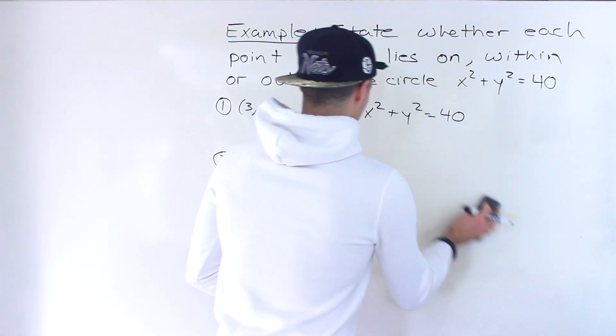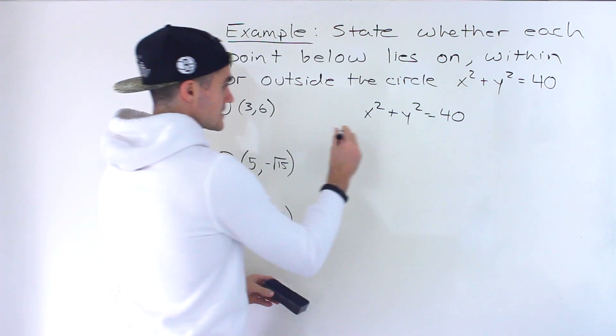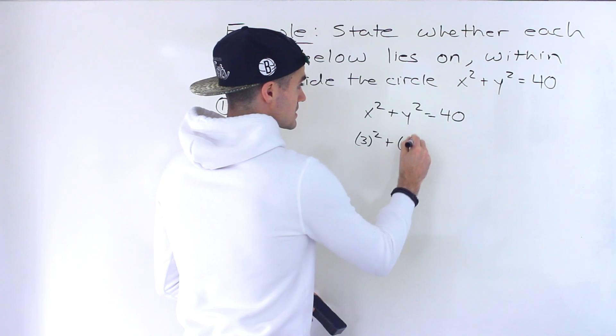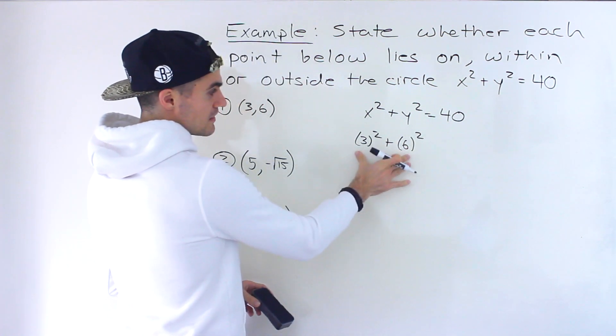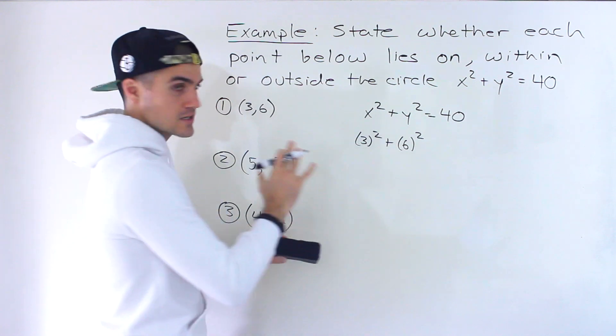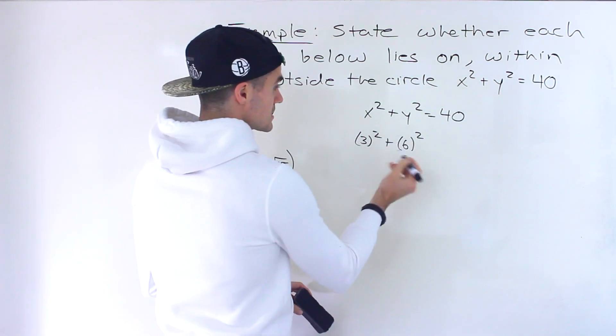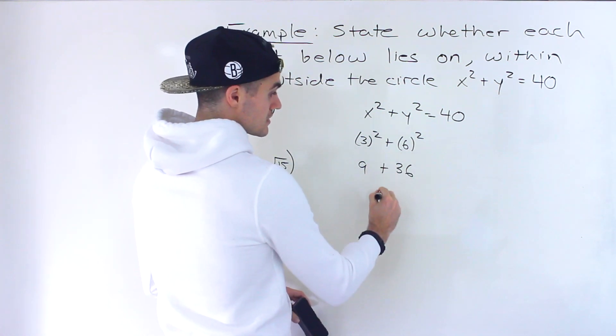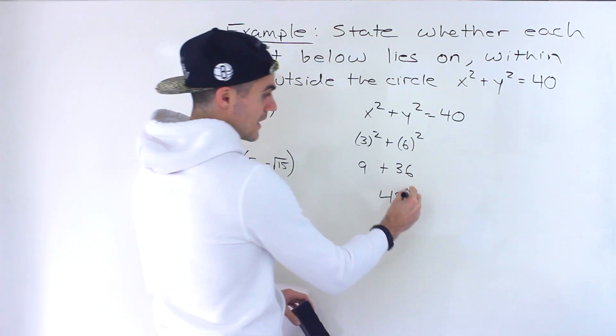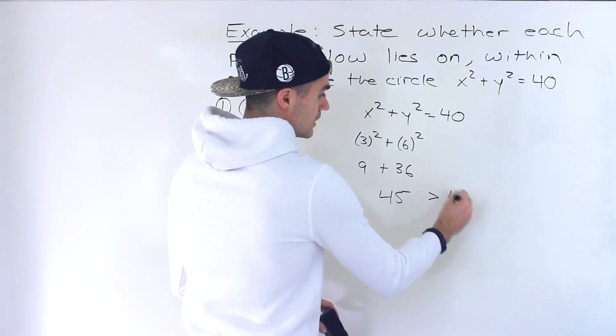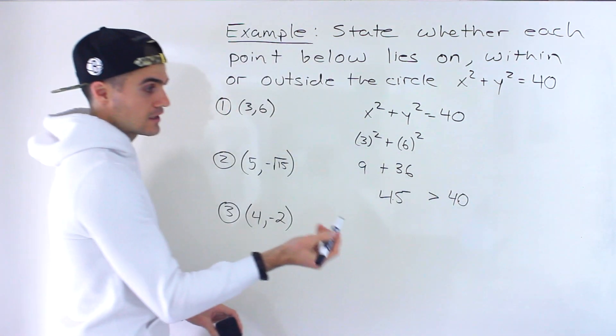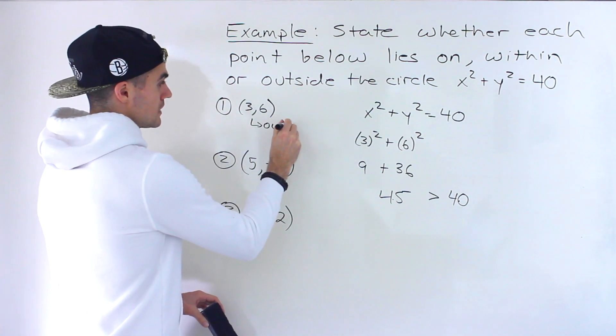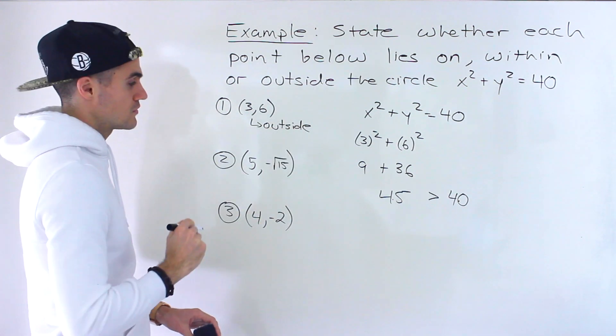If we plug in the first point 3 and 6, we'll have 3 squared plus 6 squared. I'm just going to write this out for now. 3 squared plus 6 squared gives us 9 plus 36 which gives us 45, and notice how that is greater than 40. Left side is greater than the right side, so this point is going to be outside of the circle.